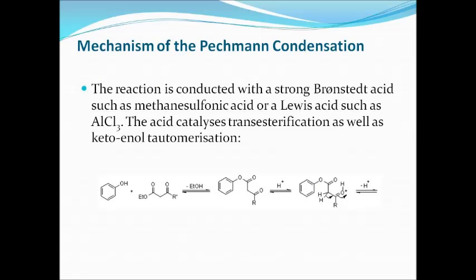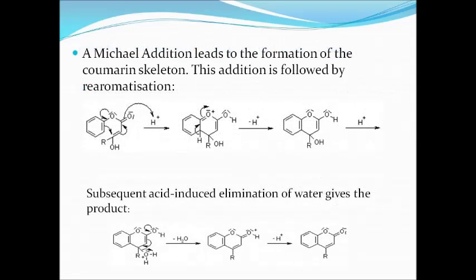The mechanism of Peckman condensation involves a strong Brønsted acid such as methanesulfonic acid, or a Lewis acid such as AlCl3. The acid catalysis, transesterification, as well as keto-enol tautomerism are all involved in this reaction. A Michael addition leads to the formation of the coumarin skeleton, followed by re-aromatization. Subsequent acid-induced elimination of water gives the product coumarin.